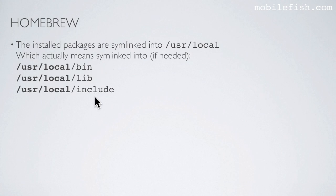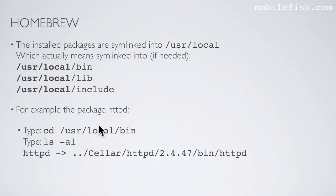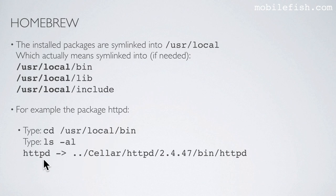For example, after the package httpd is installed and you go to this path, this symbolic link is created. And as you can see, the executable httpd is installed in the cellar.